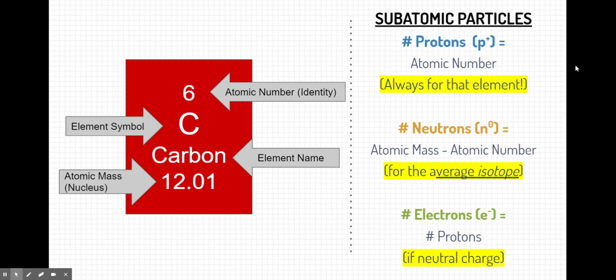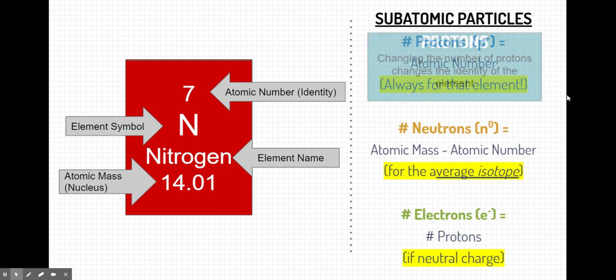Let's start with the proton. The protons come from the atomic number. That's the identity of the atom. Now, what happens if we change the number of protons? Well, if we change the number of protons, then we get a completely different element with different properties. So changing the number of protons changes the identity of the element.